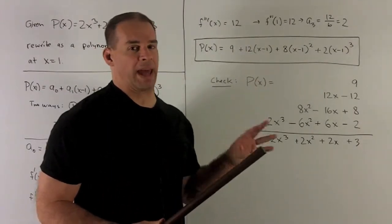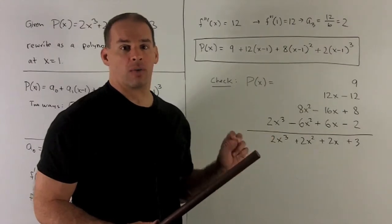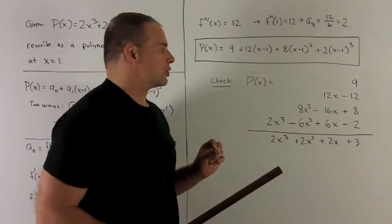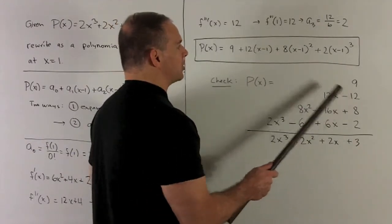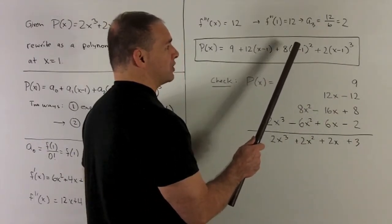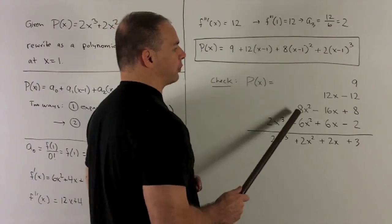Now note, we can check this just by expanding and making sure we get our original polynomial back. So really quick, my 9, 12x minus 12, this is x² - 2x + 1, pushing 8 through that.